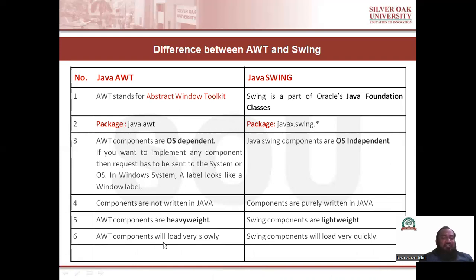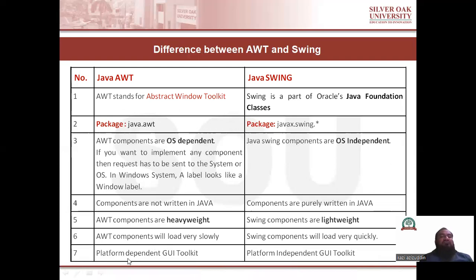AWT components load very slowly, while Swing components load very quickly. AWT components are heavyweight because they use system resources and operating system resources, which causes them to take more time to load. AWT toolkits are platform dependent, while Swing GUI toolkits are platform independent.